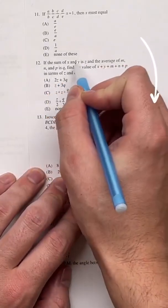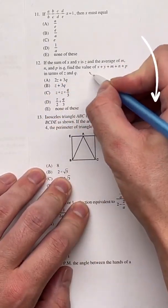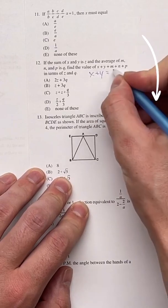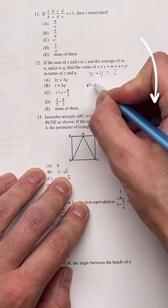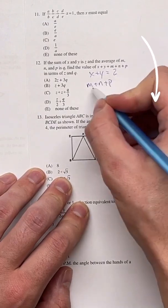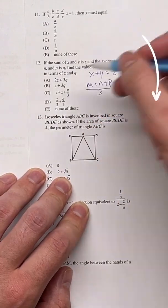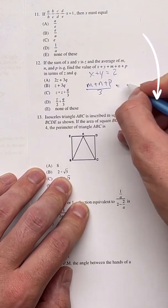We know if the sum of x and y is z, that means x plus y equals z. And we know that the average of m, n, and p is q. So that must mean m plus n plus p divided by 3, because it's the average of 3 values, equals q.